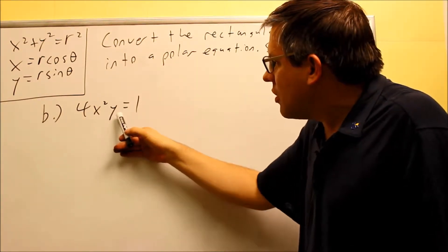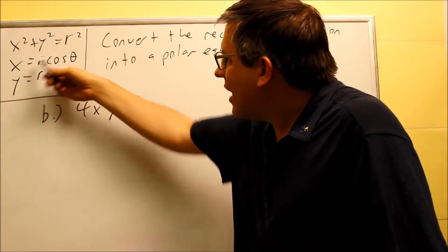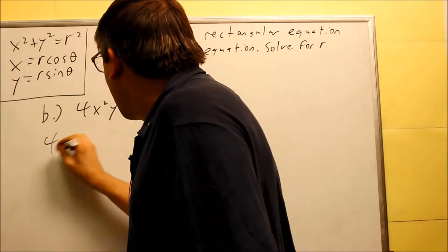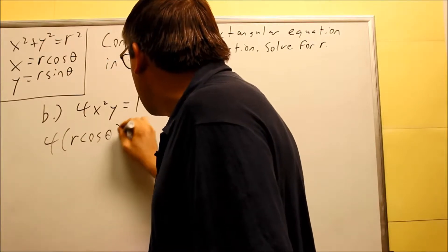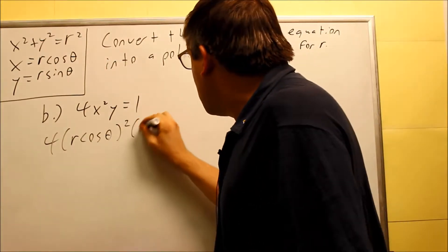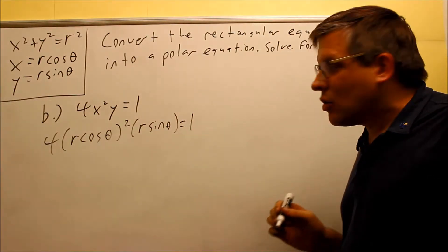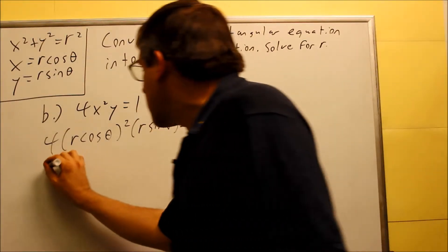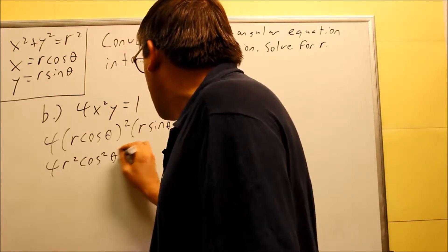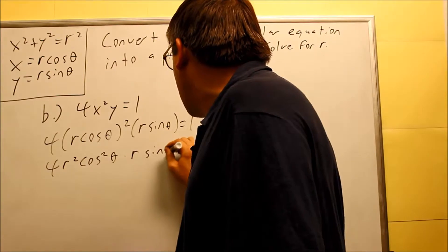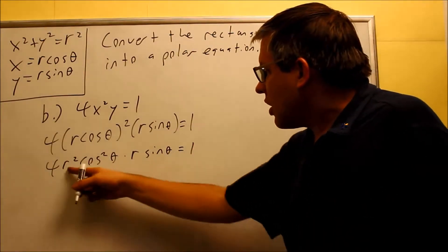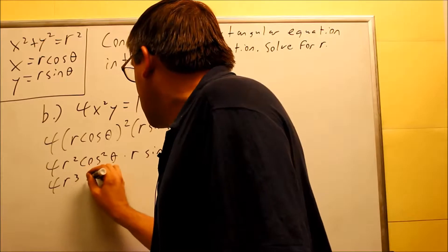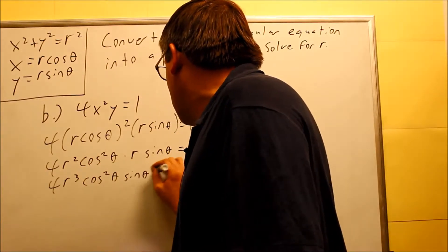We have the formulas x equals r cosine theta and y equals r sine theta, and we substitute both in. So instead of x I write r cosine theta, squared, and instead of y I write r sine theta. That gives us the equation with r's and thetas. Distributing the square gives 4r squared cosine squared theta, and we still have r sine theta on the other side, equals 1.